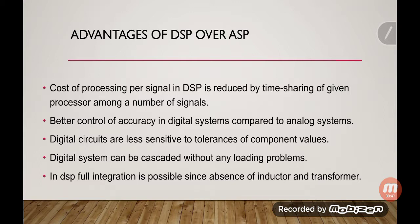Before we go further, we need to know a brief history about signal processing. Up to the 1970s, ASP was in trend because DSP had not been invented. There were some disadvantages of ASP, which led to the adoption of DSP. From the 1970s to 2000 we used DSP, and after 2000, because of some disadvantages of DSP over ASP, we now use a mixture of both.